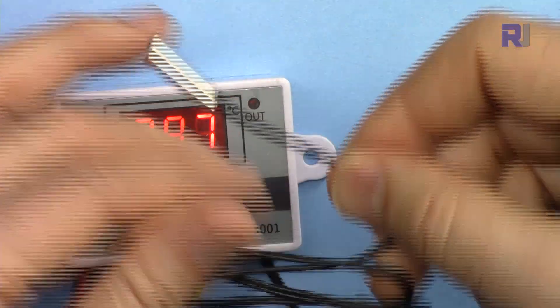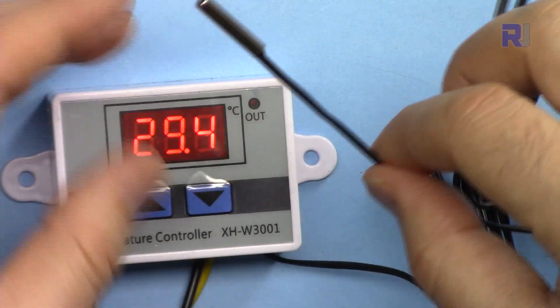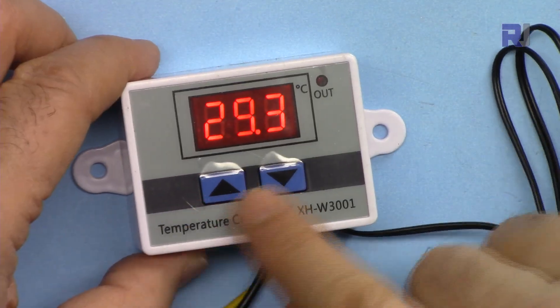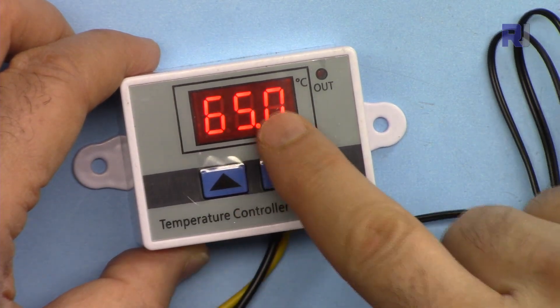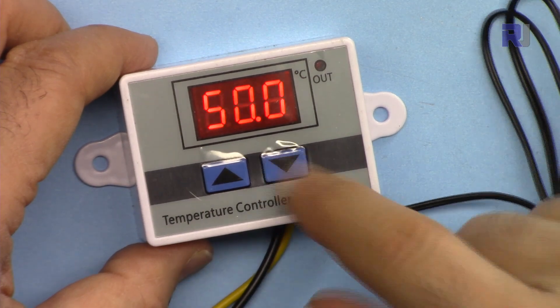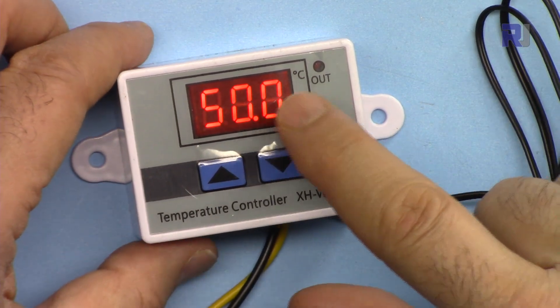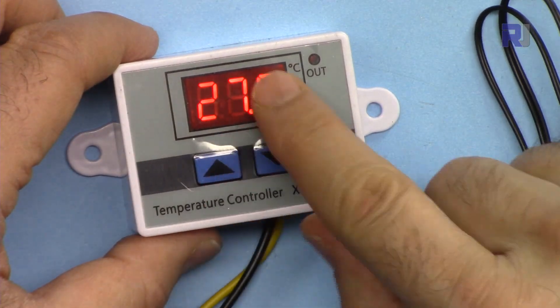The sensor can be immersed directly inside liquid or just used in air. Now these switches have functions - if I press this it shows the starting temperature and if I press this it shows the stopping temperature.